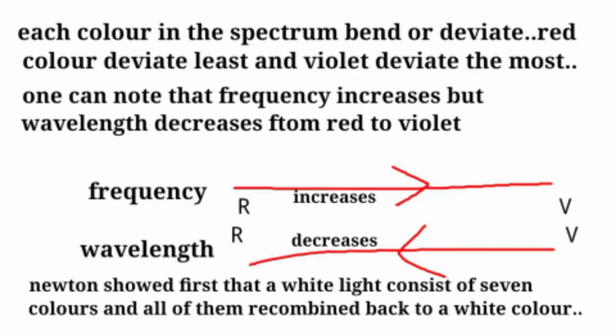Here in the figure, each color in the spectrum band deviates. Red color deviates least and violet deviates the most.